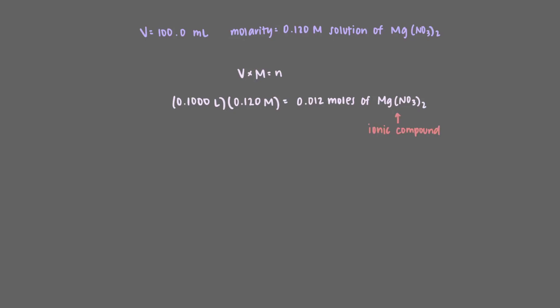Magnesium nitrate is an ionic compound, which means that it will dissociate into magnesium ions and nitrate ions. From the formula, we see that 2 nitrate ions are needed to produce 1 magnesium nitrate molecule. This means that when magnesium nitrate dissociates, the concentration of nitrate ions will be 2 times the starting concentration of magnesium nitrate. So we'll multiply 0.012 moles by 2 to get that there are 0.024 moles of nitrate ions in our solution.